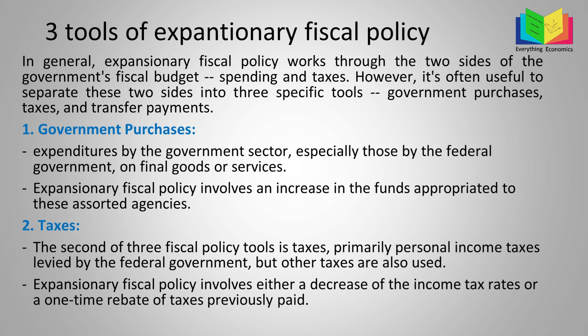The first tool of expansionary fiscal policy is government purchases — expenditures by the government sector, especially the federal government, on final goods or services. These could be anything from consumer goods to any other type of goods, and they are called government purchases because the government is purchasing those goods and services. Expansionary fiscal policy involves an increase in the funds appropriated for these agencies, meaning the government increases its purchases and spends more.